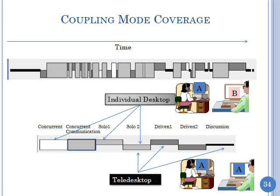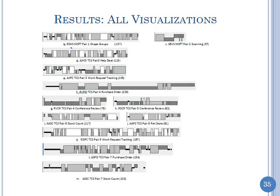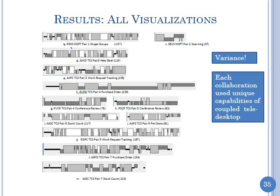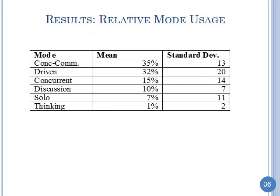What we found was that the answer varied. The paper contains per-session detail, but the key point is there was high variance — no real pattern that repeated in every session. However, each collaboration involved using some unique capabilities of coupled teledesktops. Aggregating the statistics, we found that 35% of the time people spent in concurrent communication mode, which is a very strong argument for coupled teledesktops since this mode is only supported by this new abstraction.